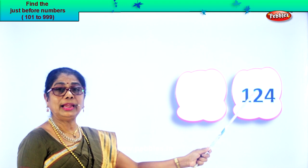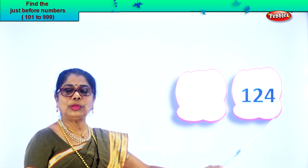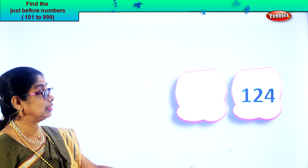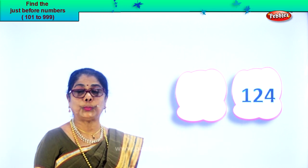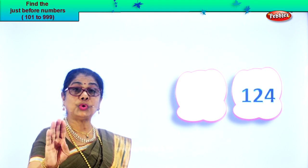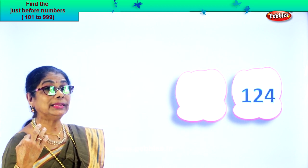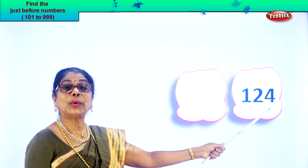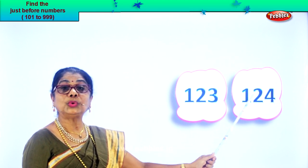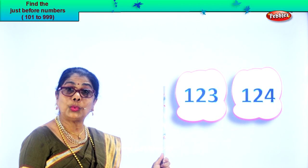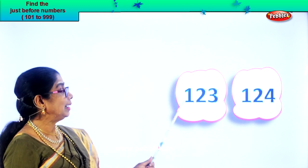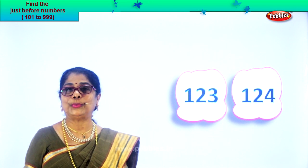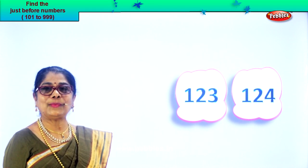One hundred and twenty-four. Four in the ones place, two in the tens, and one in the hundreds place. In the ones place you have four — one less than four is three. So twenty-four becomes twenty-three. One hundred and twenty-three is the number before. One hundred and twenty-three, one hundred and twenty-four.